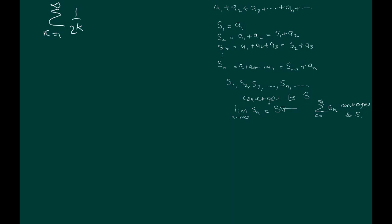If we break this up into partial sums, the first term S_1 is going to be 1 over 2. S_2 is going to be 1 over 2 plus 1 over 4, which is 3/4.